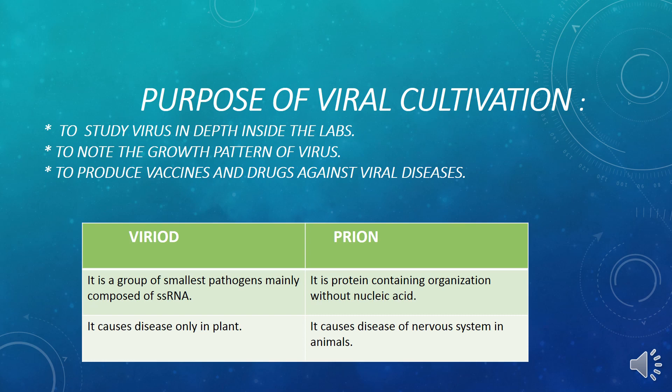The main interesting difference here is that viroid consists only of single-stranded RNA — it is nucleic acid-based and has no protein. Whereas prion is a protein-containing organism with no nucleic acid. The second difference is that viroid causes disease in plants, whereas prion causes diseases of the central nervous system in animals.